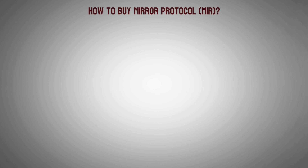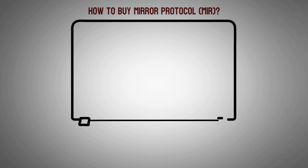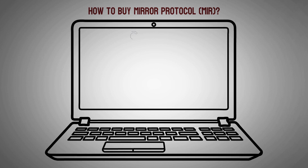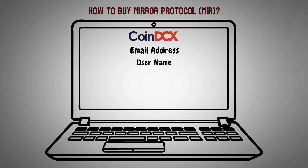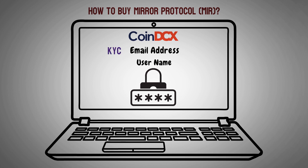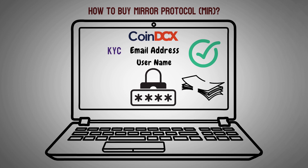How to buy Mirror Protocol? To buy your first MIR with the CoinDCX app, follow these three simple steps. First, sign up for an account with CoinDCX — provide a valid email address, a username, and set a strong password after verifying your email ID. Second, verify the account: to purchase MIR on the CoinDCX platform, you must complete your KYC by submitting the required documents, and within 15 minutes your account will be created. Third, buy MIR: once your account has been validated, you can deposit any amount of fiat cash you want and start your crypto journey.